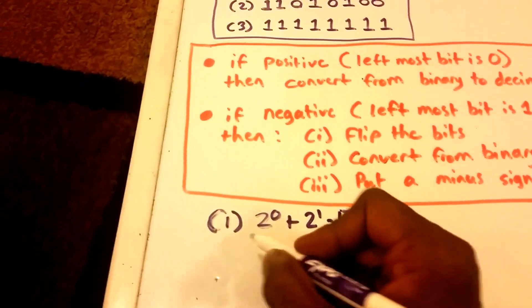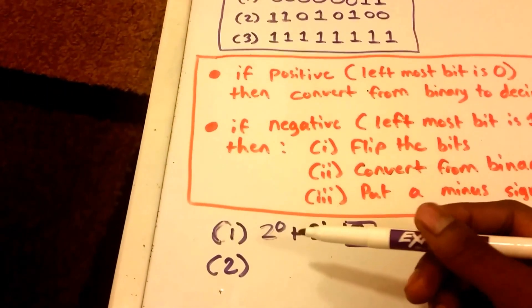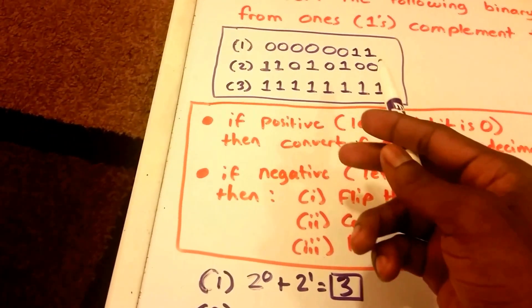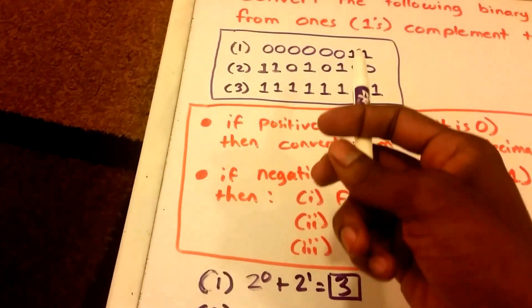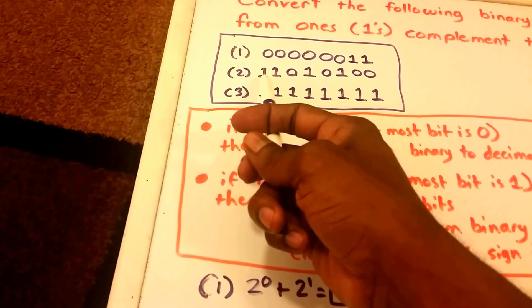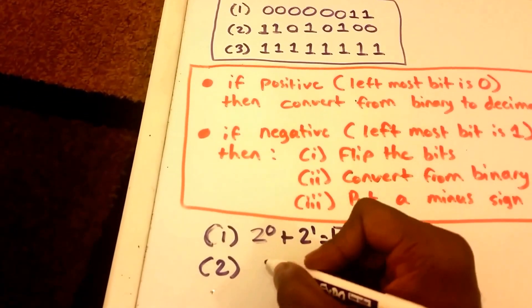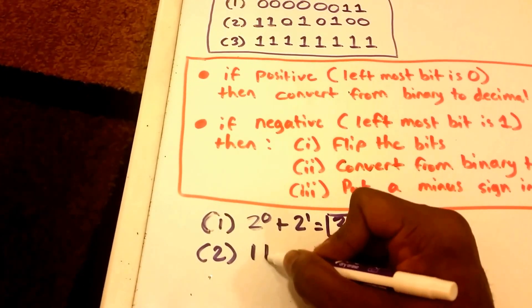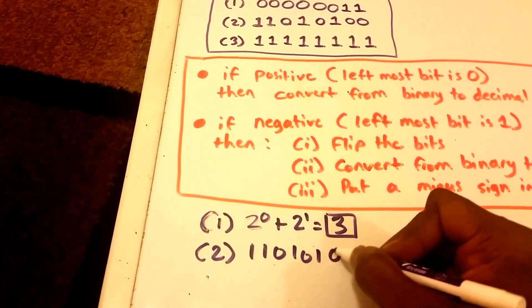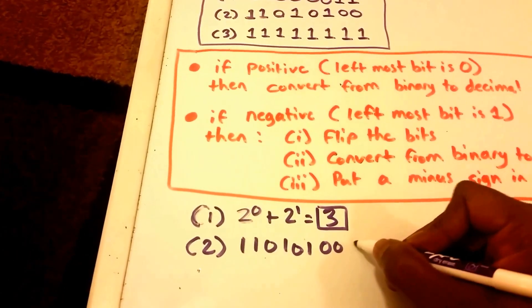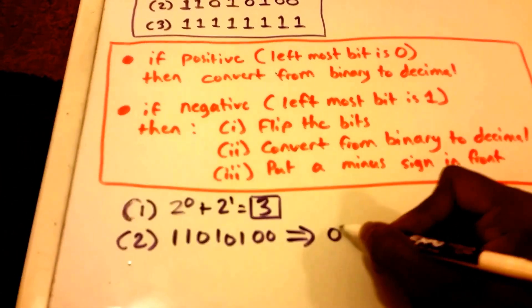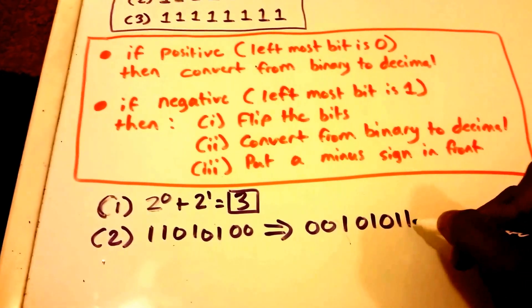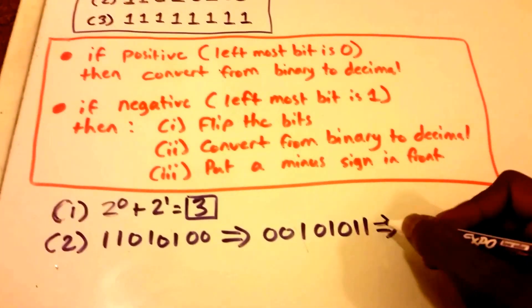The second binary number is 11010100. This is a negative binary number because the leftmost digit is a one. So we flip the bits: the original 11010100 becomes 00101011.